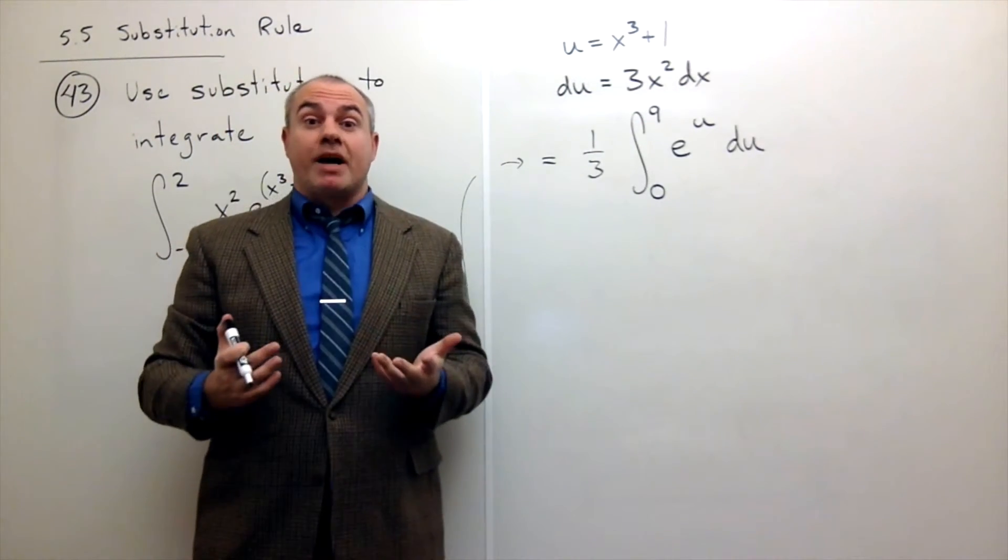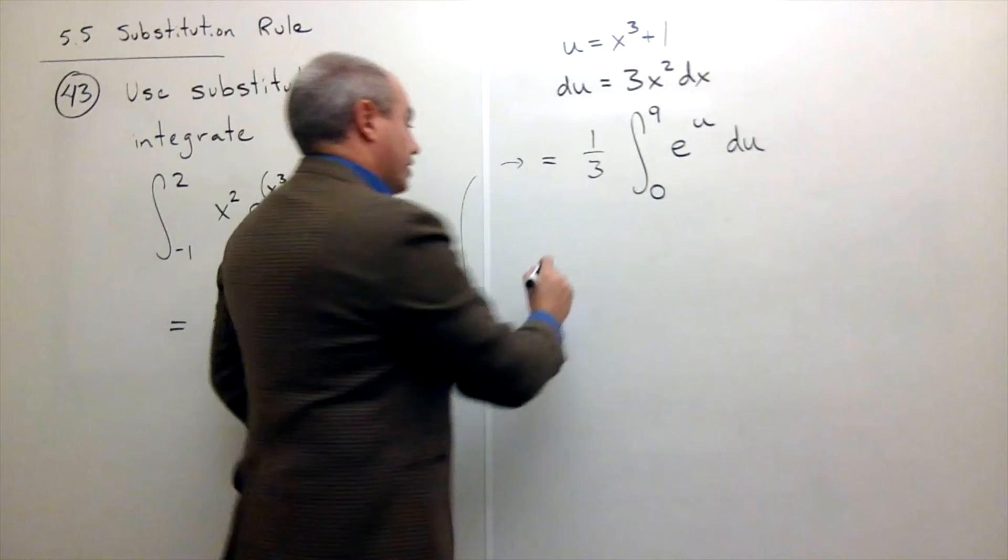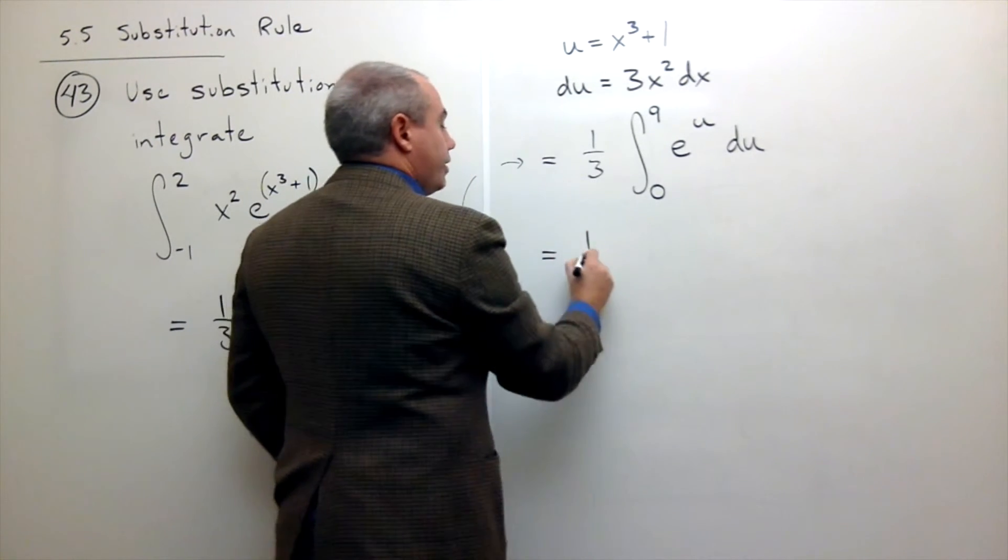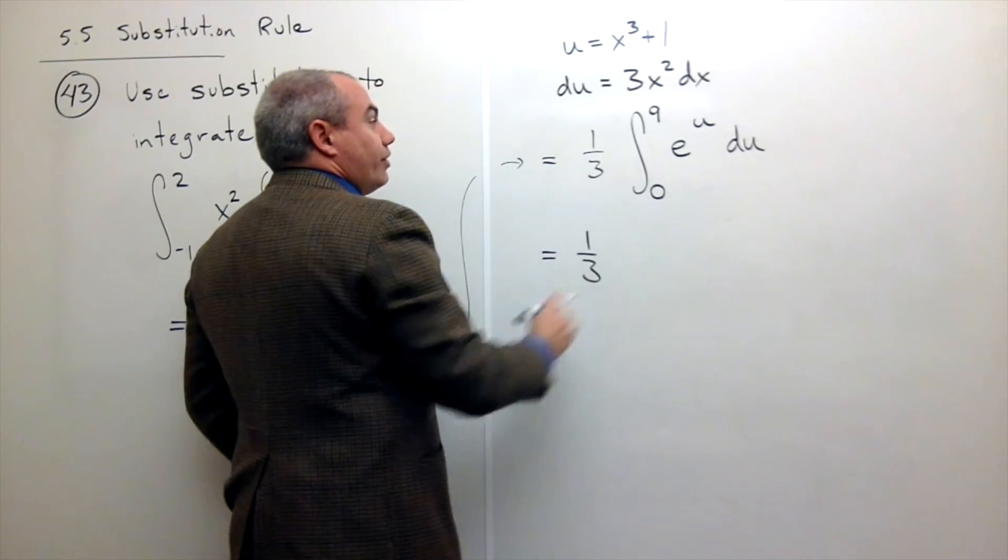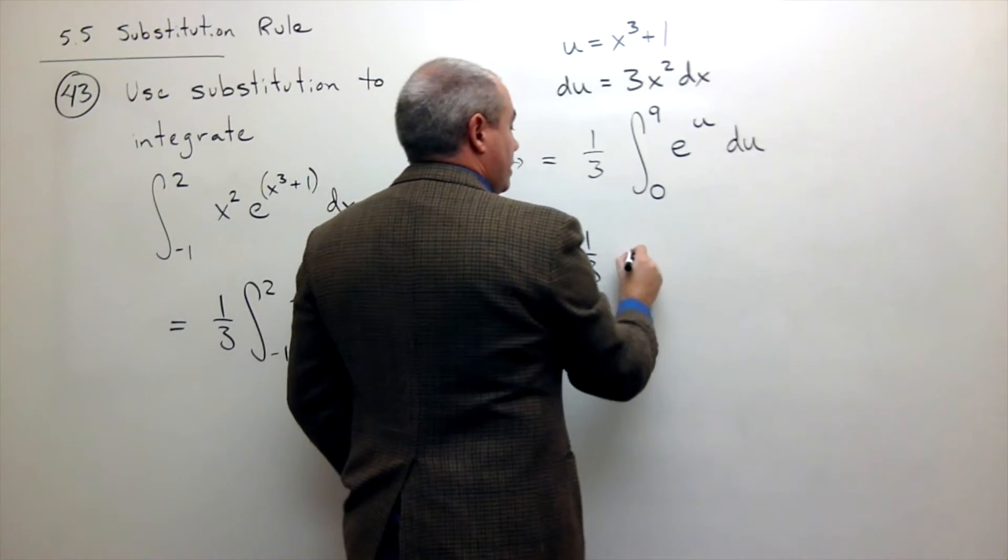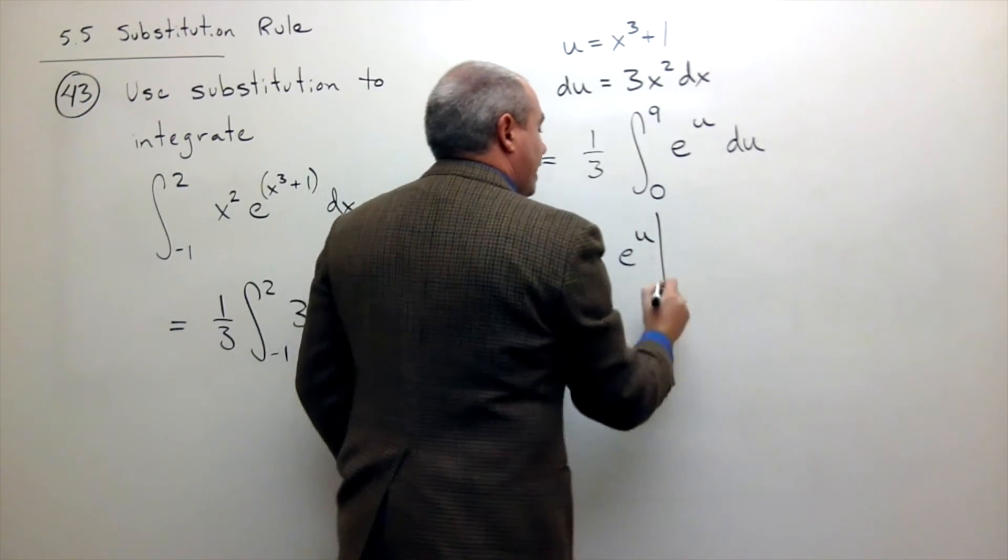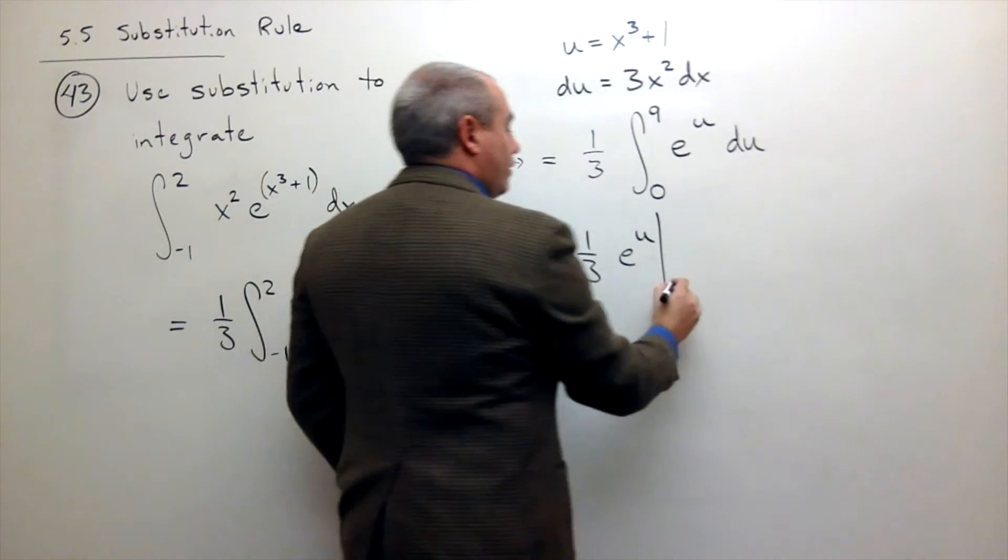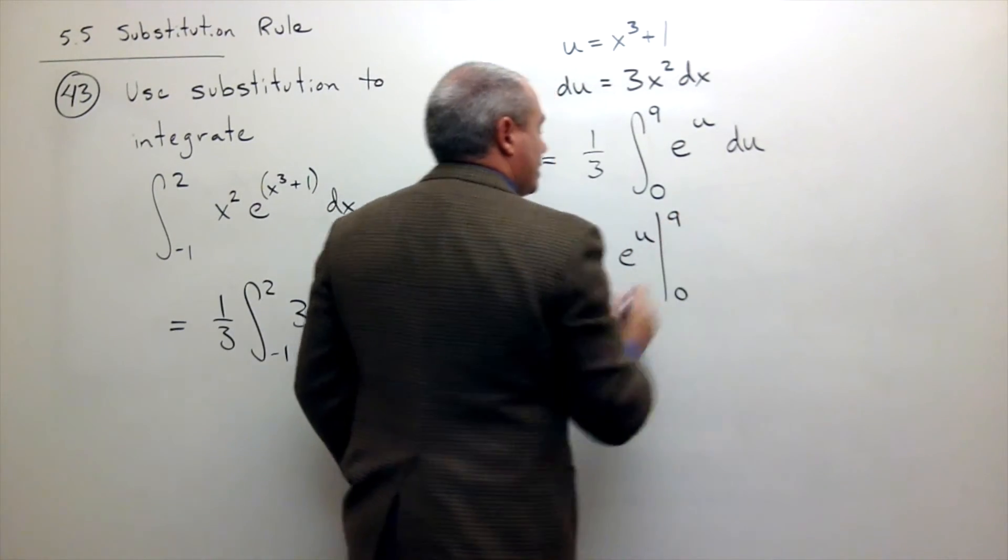Now I'm ready to take my antiderivative. So let's do it. The antiderivative of e to the u is e to the u, and that's going to be evaluated from 0 to 9.